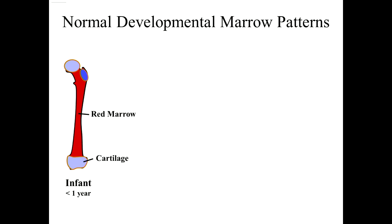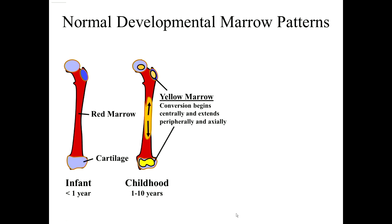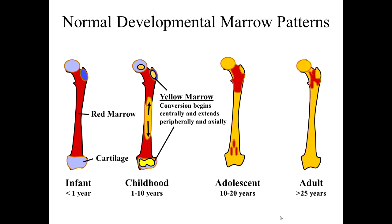It's important to understand the normal development of marrow patterns to see how this reverts with red marrow hyperplasia. In the infant, there is normally red marrow throughout all of the skeleton and diffusely throughout the long bones. As you progress into childhood, more yellow marrow will populate throughout the shafts, apophyses, and epiphyses. In adolescence, it becomes much more yellow marrow, with areas of red marrow preserved within the proximal femur and distal metaphysis. With full-fledged adulthood, the distal femur around the knee is primarily fatty.